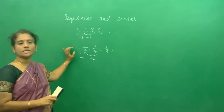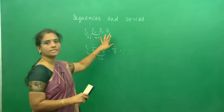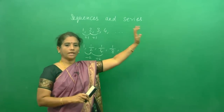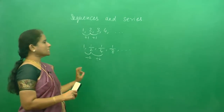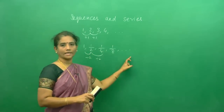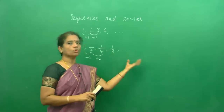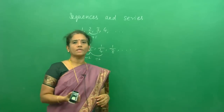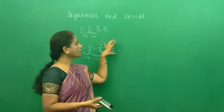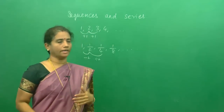From these two sequences, you might understand that in the sequence 1, 2, 3, 4, the terms go on increasing and will go up to infinity. But in the sequence 1, 1/2, 1/4, 1/8, the terms go on decreasing. When the terms go on decreasing, by common sense we know the nth term will tend towards 0. So we can say this is a convergent sequence because the terms go on decreasing.